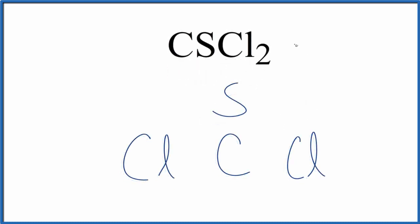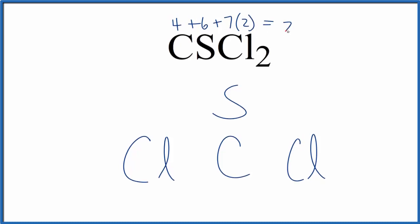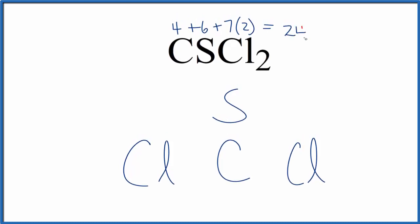If we count our valence electrons: carbon has 4, it's in group 14, sometimes called 4A; sulfur has 6; chlorine has 7, but we have two chlorine atoms. We add all that up, we get a total of 24 valence electrons for the CSCl2 Lewis structure.